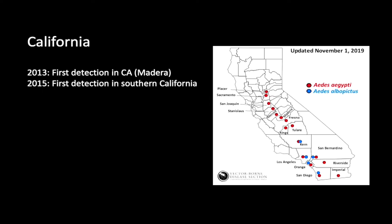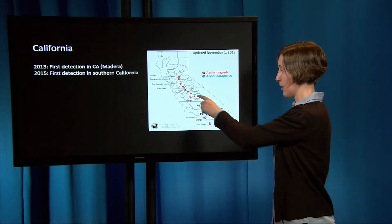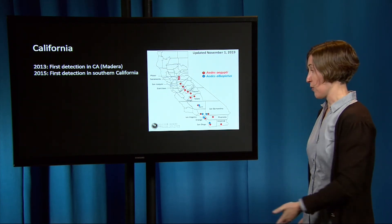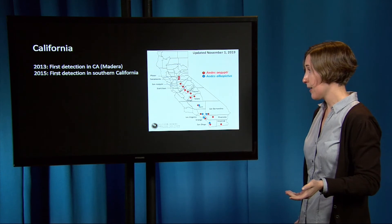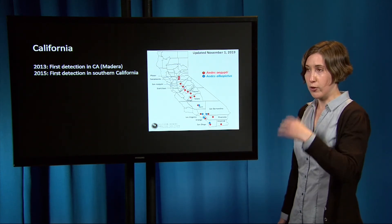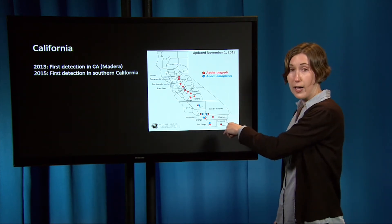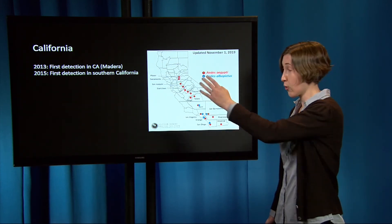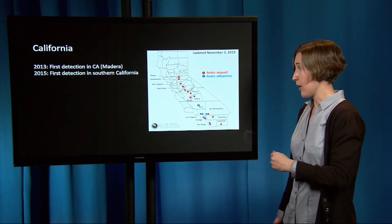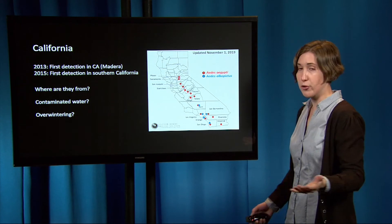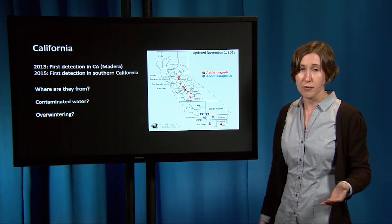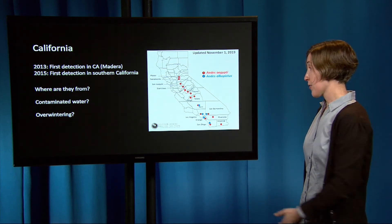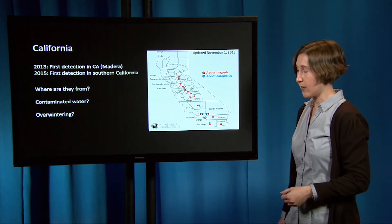Aedes aegypti was first detected in California in Madera in 2013. Folks were worried at the time — maybe it was coming up from Mexico where there is some dengue. Then two years later, during a really bad drought, they detected the mosquito in Southern California, and worried maybe it was coming down from Northern California in contaminated water. There was also uncertainty about whether it was surviving over winter in California, even though it freezes occasionally, which Aedes aegypti doesn't like. And then it spread really quickly — as you can see, it's now covered a lot of the state.